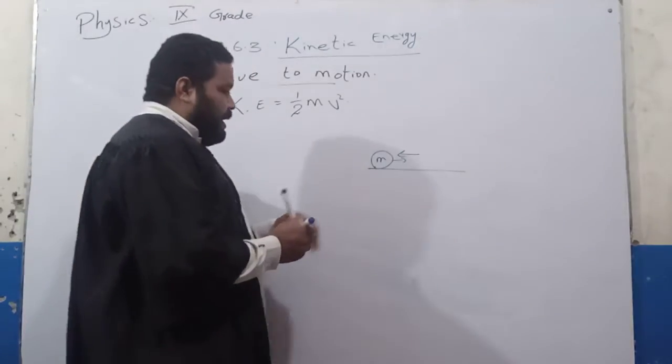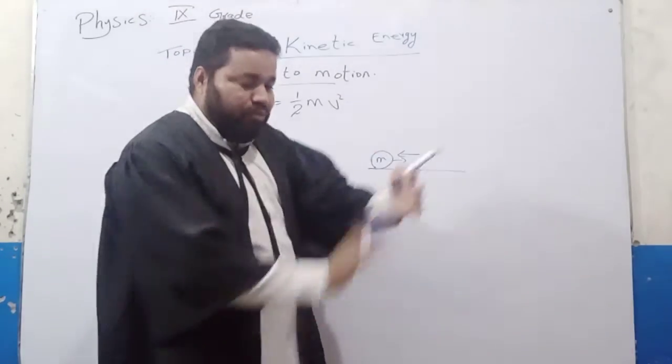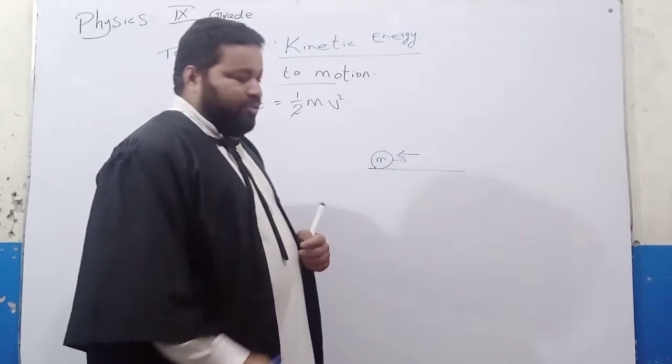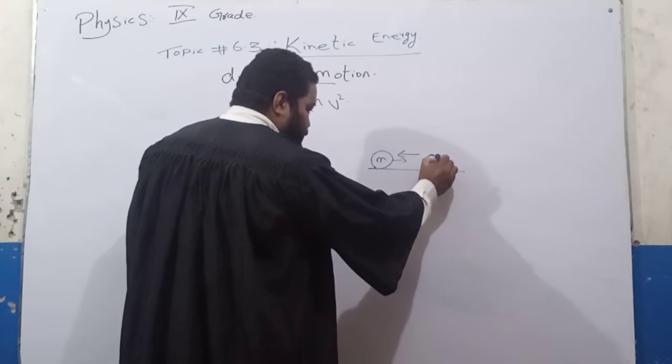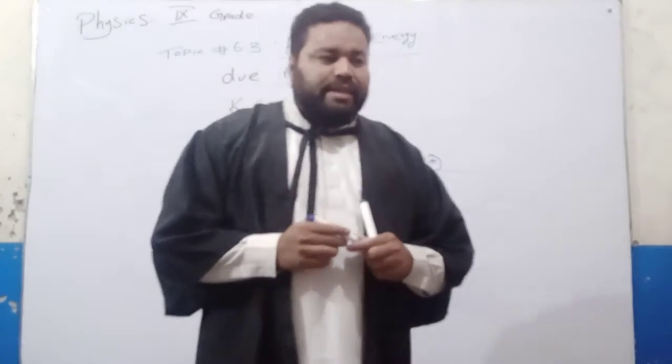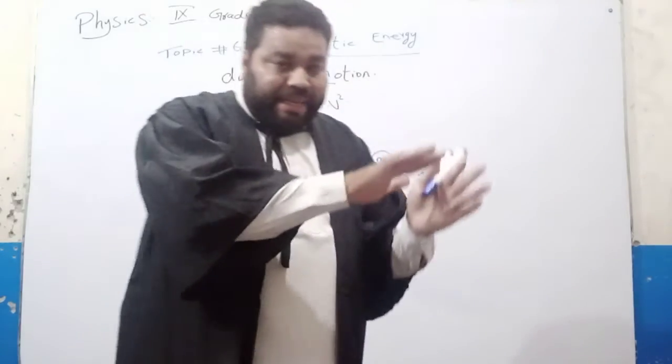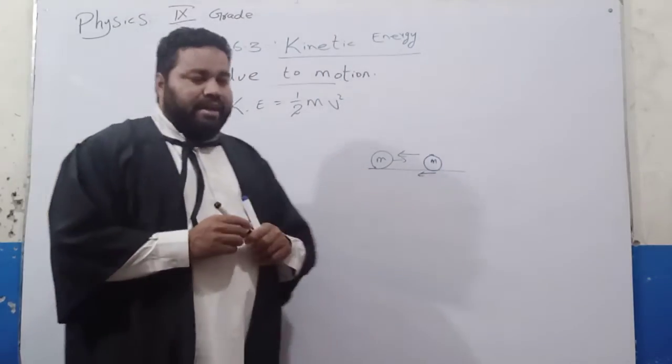But if the force is to act against the motion and the direction of the motion, then the force acts on the body and retardation will be produced. Now what is retardation? The decrease in the velocity of the body is called as retardation.